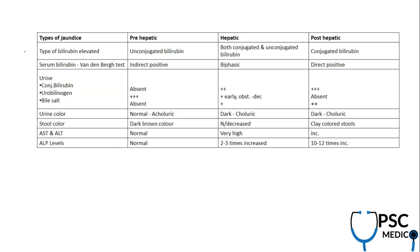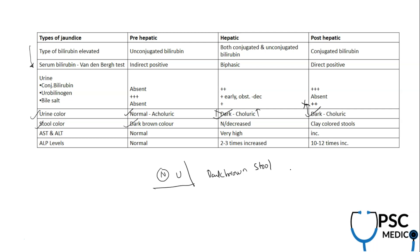Urine examination is important because examiners sometimes ask questions based on urine and stool color. In pre-hepatic jaundice, urine color is normal but stool is darkish brown. Dark-colored urine is seen in obstructive or hepatic jaundice. Normal urine with dark stool rules out hepatic and post-hepatic, leaving only pre-hepatic or hemolytic jaundice.